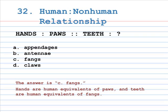Number 32: human is to non-human relationship. Hands is to paws as teeth is to A. Appendages, B. Antennae, C. Fangs, D. Claws. The correct answer is C, Fangs. Hands are human equivalents of paws, and teeth are human equivalents of fangs.